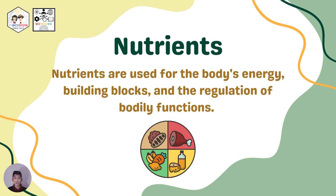Next, nutrients. Based on biochemical characteristics, there are six main categories of nutrients: carbohydrates, proteins, fats, water, vitamins, and minerals. These are used for the body's energy, building blocks, and regulation of bodily functions. National athletes like Aliza Gomez, Carlos Yulo, and Heidi Lendias do well in sports because, aside from extensive practice, they also have good diets with lots of these nutrients. Nutrition is very important to us as living organisms.